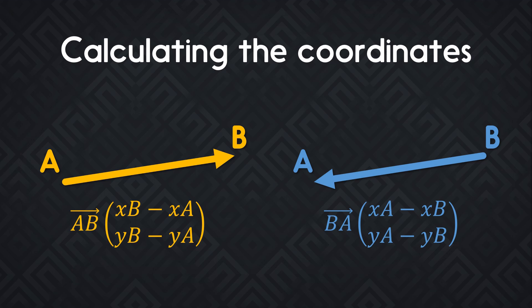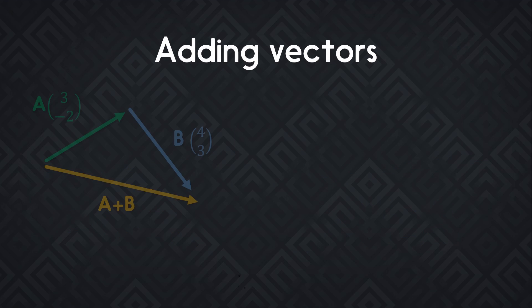Godot, like many other engines, calculates that for you so you don't have to bother too much about it. Now you can add vectors together. If you take two vectors A and B, the addition of those gives you a vector that starts at the start of A and ends at the end of B.